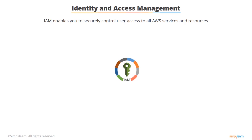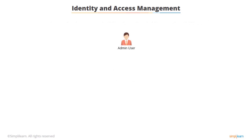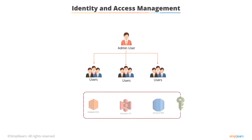So, what is IAM? Identity and Access Management is the service that enables you to securely control user access to all your AWS services and resources. It's based around the concept of user management that you'll already be familiar with – users, groups, and permissions.